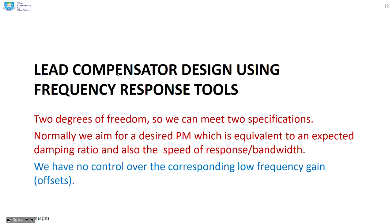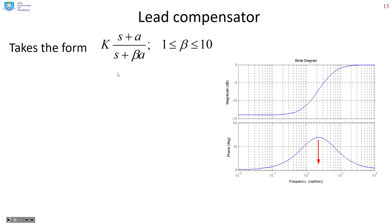Lead compensator design using frequency response tools. Again, a lead has two degrees of freedom, so we can meet two specifications. What we're going to aim for is a desired phase margin — again equivalent to an expected damping — and speed of response or bandwidth. As a consequence, we have no control over the corresponding low frequency gain.